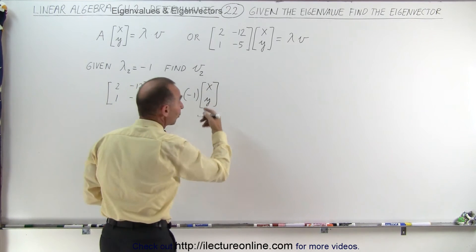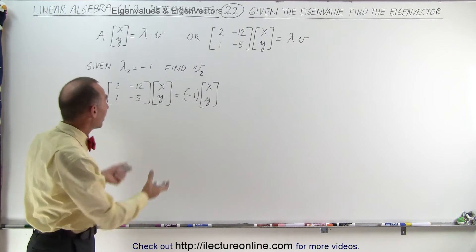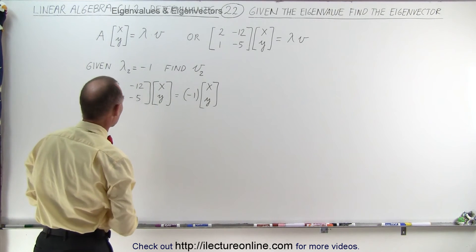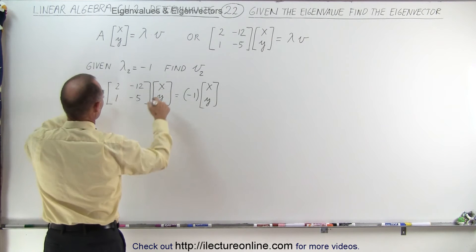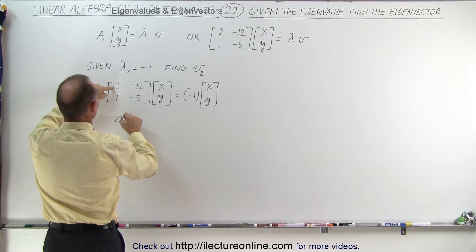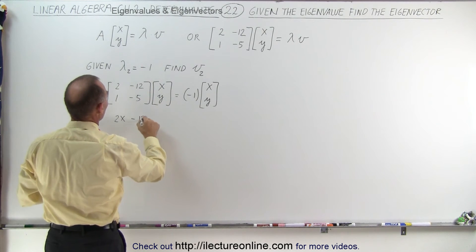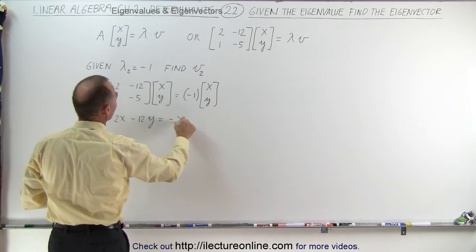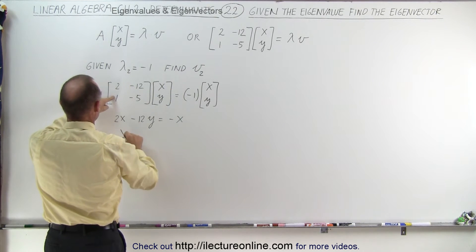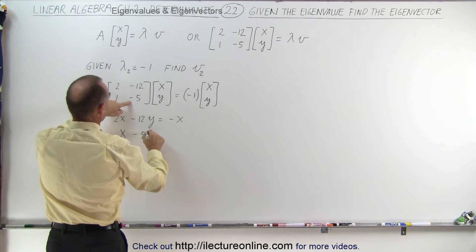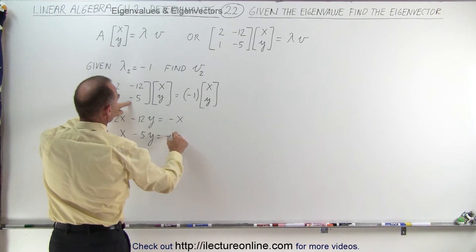And this will allow us to find the values for x and y that match this. If we multiply this, we get 2 times x minus 12 times y equals minus x, and 1 times x minus 5y equals minus y.